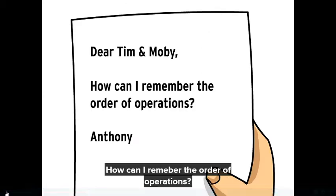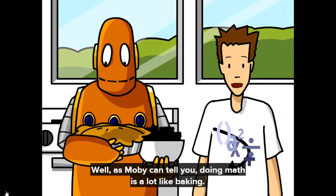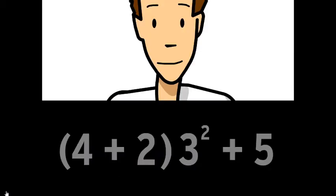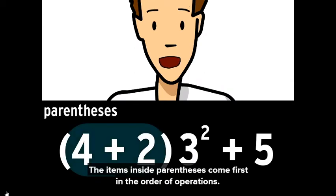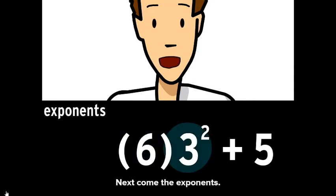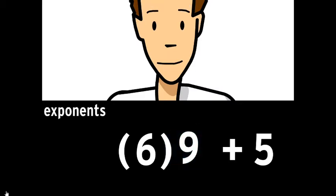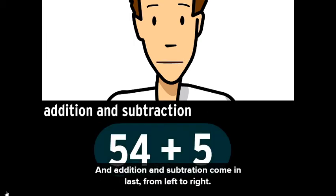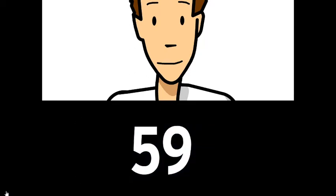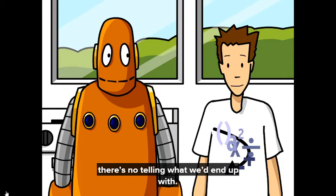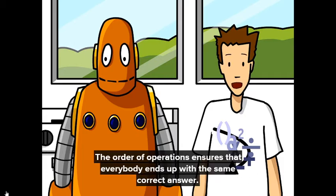Dear Tim and Moby: how can I remember the order of operations? From Anthony. As Moby can tell you, doing math is a lot like baking — you can't just do the operations in any old order. The items inside parentheses come first. You do the stuff inside the parentheses before anything else. Next come the exponents — three squared is nine. Multiplication and division are next; you work those from left to right. And addition and subtraction come last, from left to right. The order of operations ensures that everybody ends up with the same correct answer.